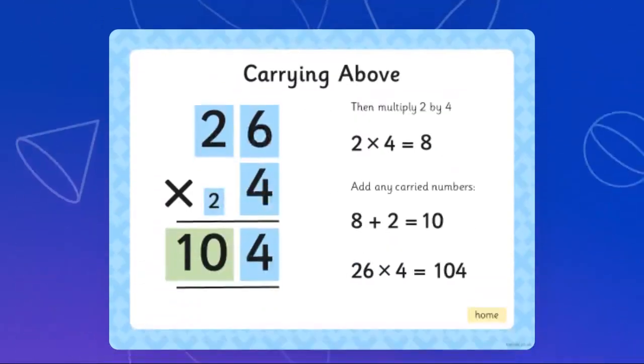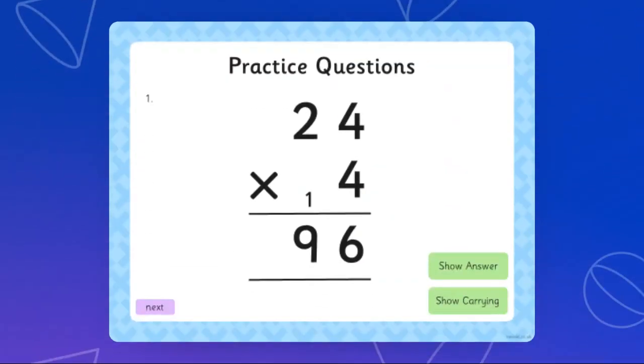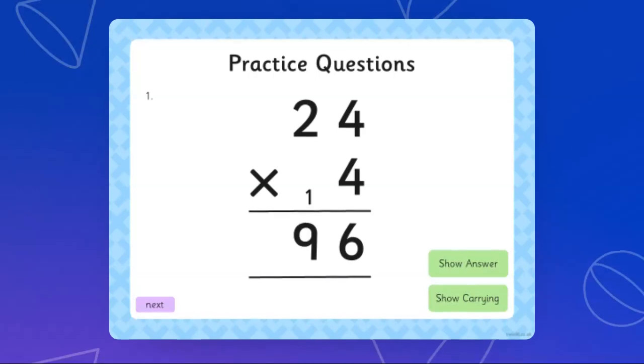Now what we're going to do is I provided you some multiplication practice questions. So as you can see, 24 times 4. 4 times 4 is 16, then he's carrying above. 2 times 4 is 8 plus 1, which makes it 9.